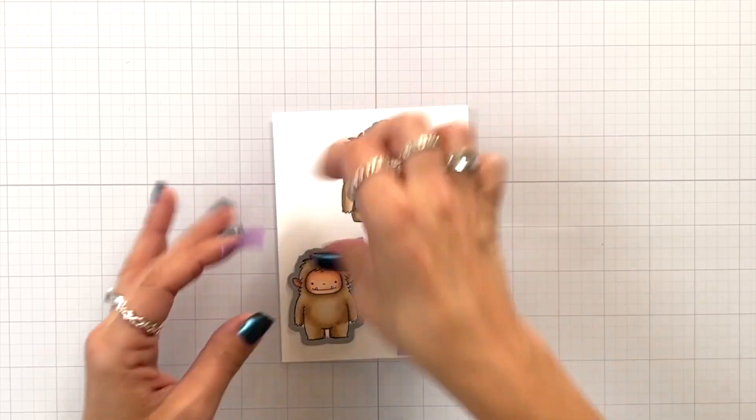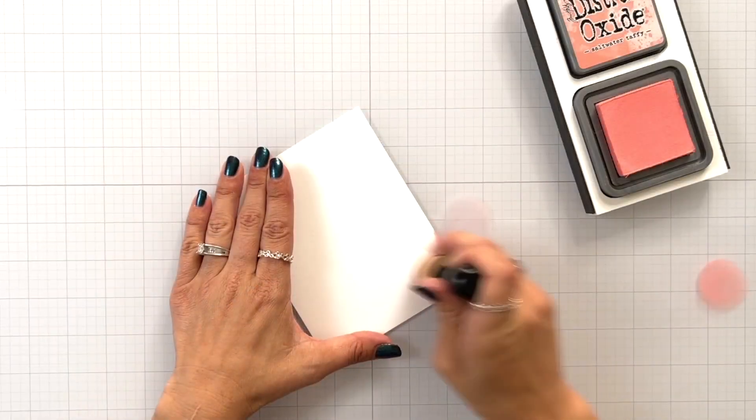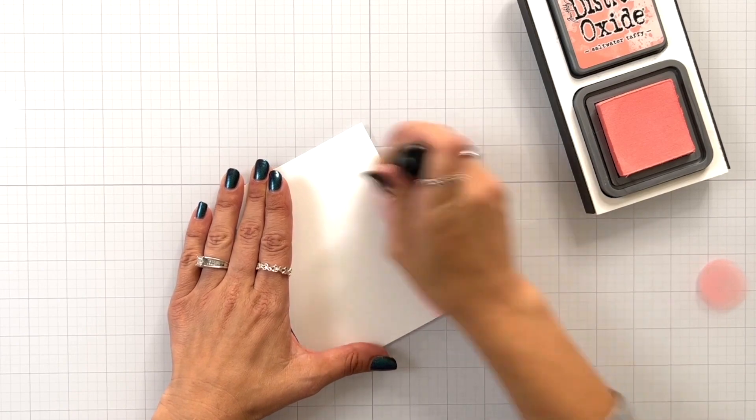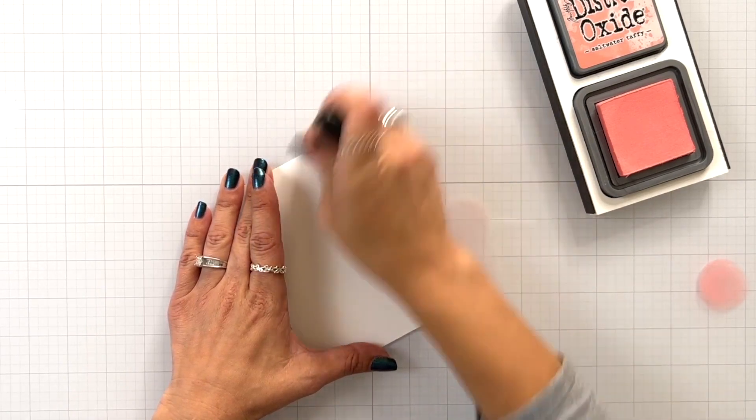Once everything is completely colored in, I'm going to take the coordinating dies, line them up, and run them through my die-cut machine.